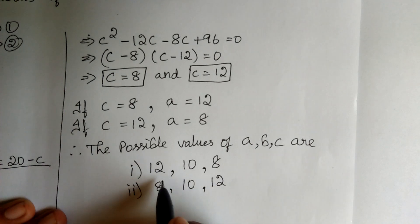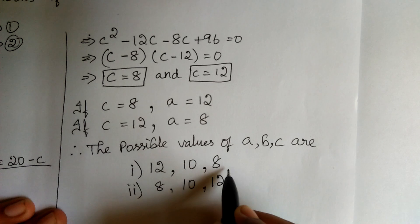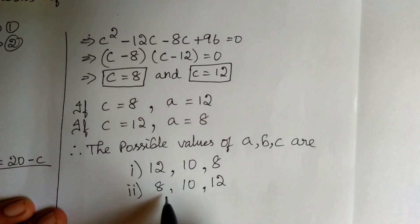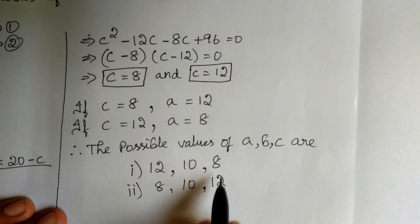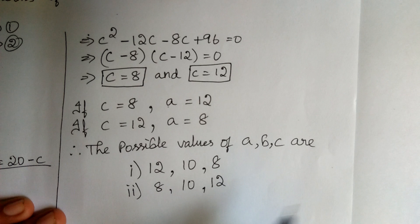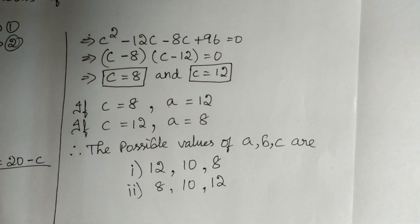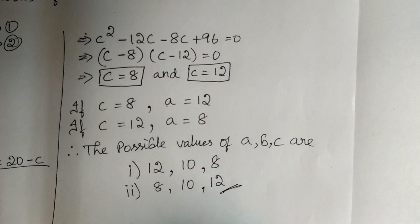In the first solution, we get a decreasing arithmetic progression, and in the second, we get an increasing arithmetic progression. We got two types of arithmetic progressions, giving two sets of values for A, B, C. This is the answer.